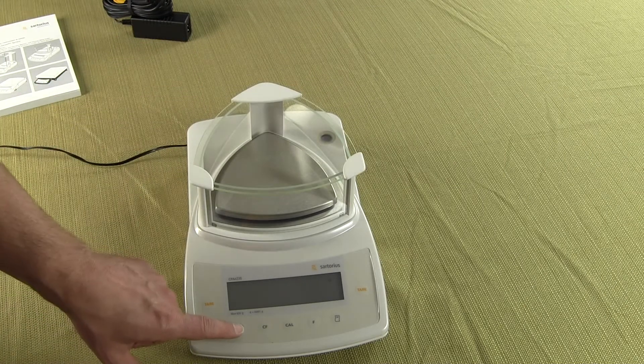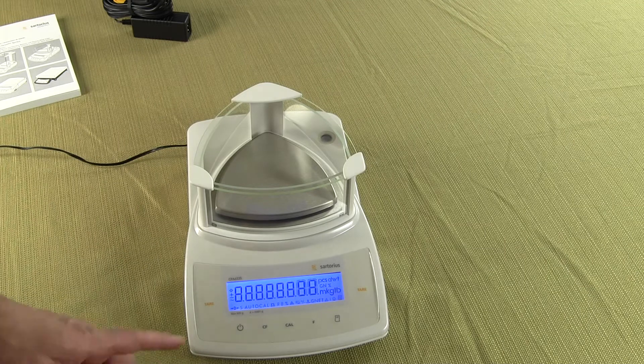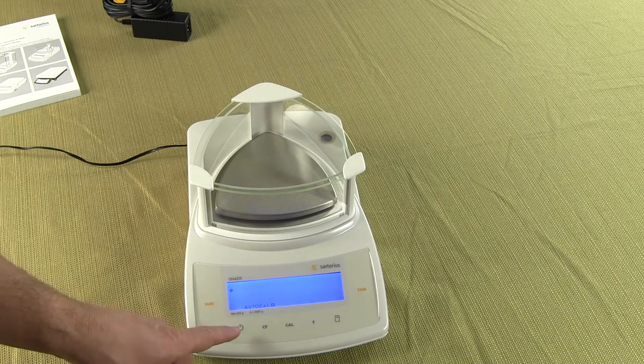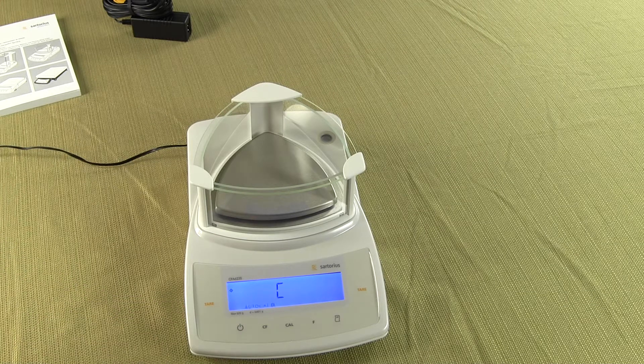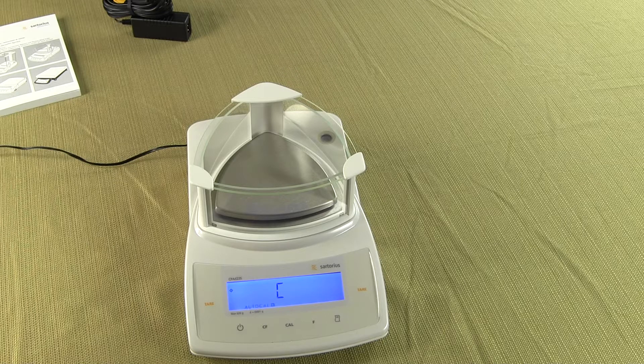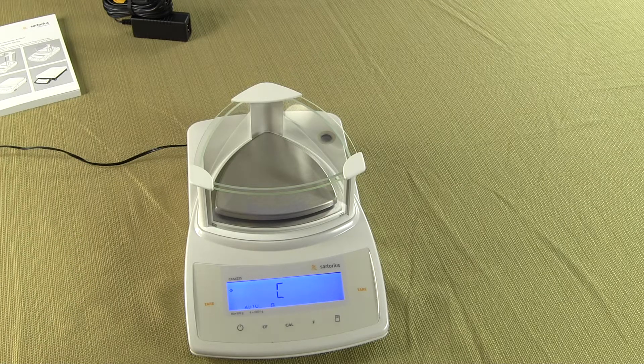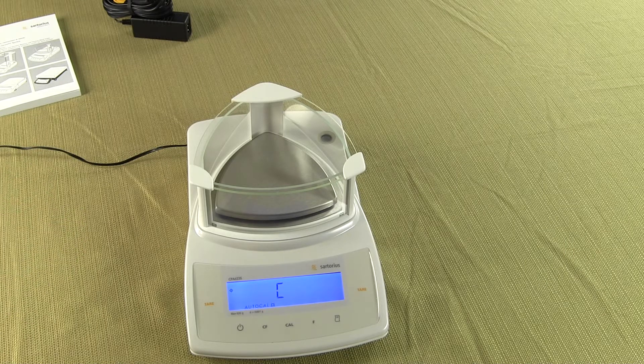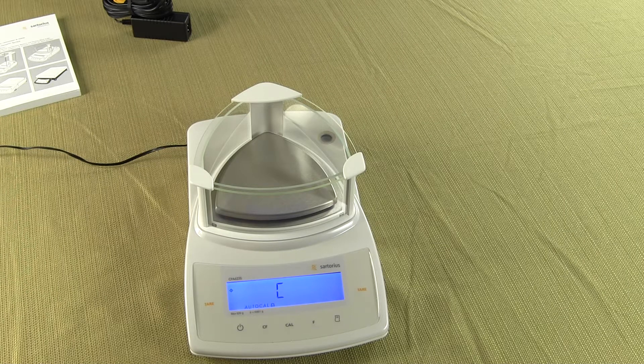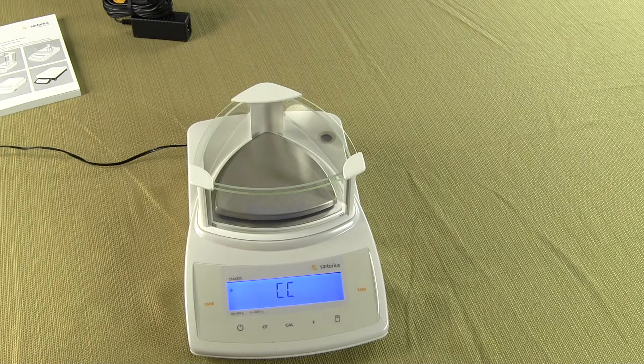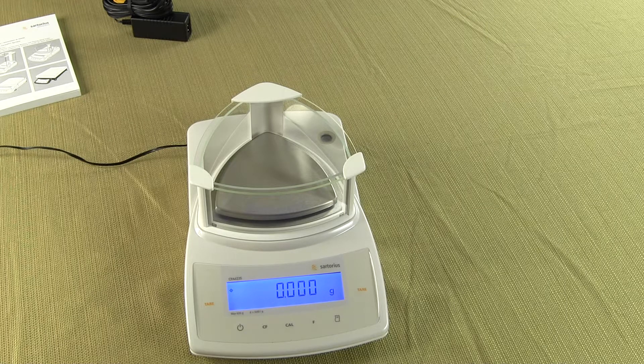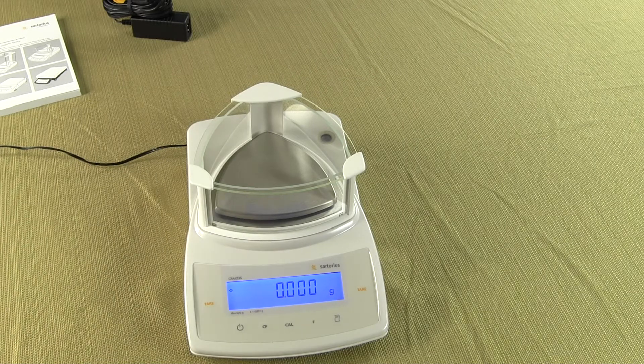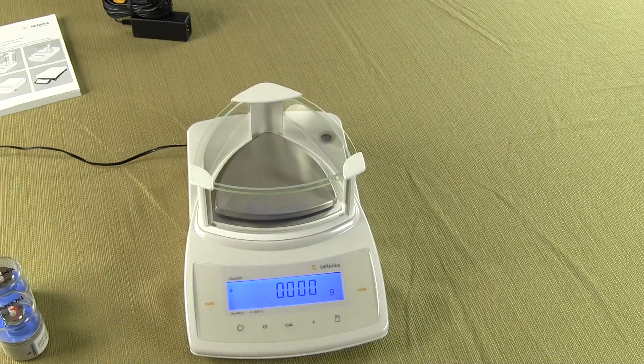We're ready to power up the Sartorius CPA 623S. And you notice when the balance powers up it does a functional test and you can see it says Auto Cal. It automatically goes out and performs a calibration. So when the balance is first powered up it senses any temperature change or the last time the balance was calibrated. Now prior to this demonstration I did have this balance running for a good hour. So it has acclimated to the environment that it's in. So the balance now reads zero zero and we can use some external calibration weights and see how this balance performs.